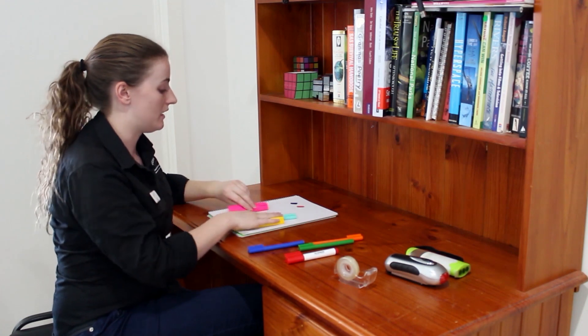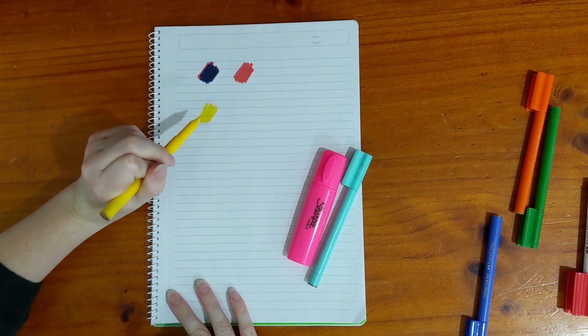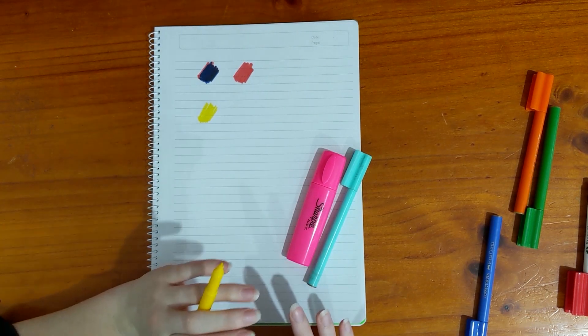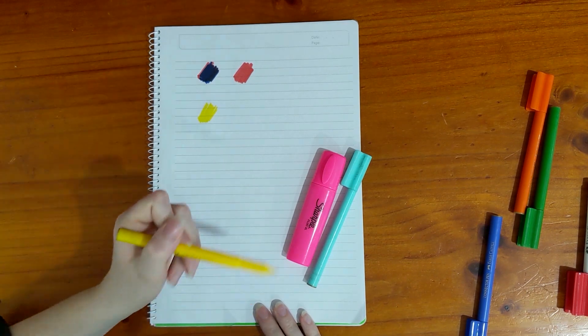So if I put down some yellow on the page here, that yellow is absorbing all the blue but it's actually reflecting both red and green back to our eyes.